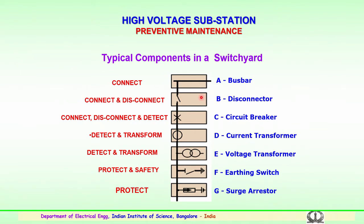The third component is the circuit breaker, which is an important component as mentioned earlier. The important function of a circuit breaker is to connect the circuit for normal operating conditions, then disconnect in case of overvoltages or during fault conditions. The circuit breaker also detects faults and operates accordingly. Then we have two important instrumentation components: the current transformer and the voltage or potential transformer, which detect and transform information in terms of current or voltage to the control unit or SCADA control center.